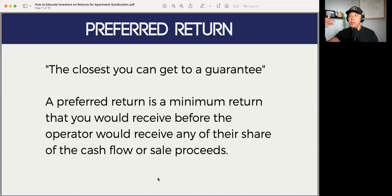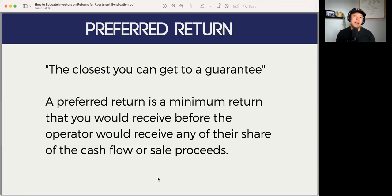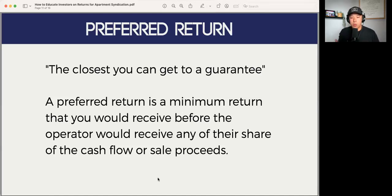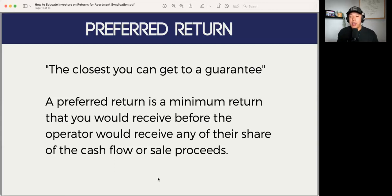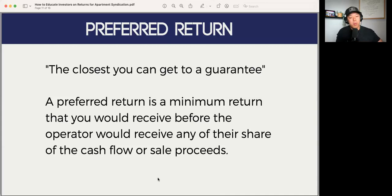Before we wrap up on that — the last one, the preferred return. When I talk about the preferred return, people often ask, 'What is my guaranteed return?' I use this as the closest thing you can get to a guaranteed return because this is where the alignment of interest comes in between the general partners and the passive investors — meaning that you as the passive investor need to reach that preferred return before the GPs can participate in cash flows and profits from the property. So if you win, we win. Investor-first returns.